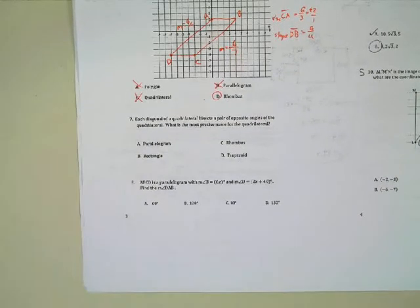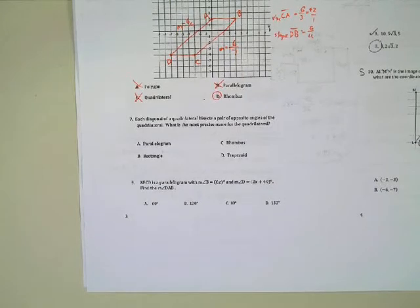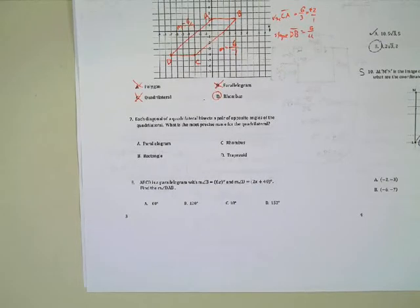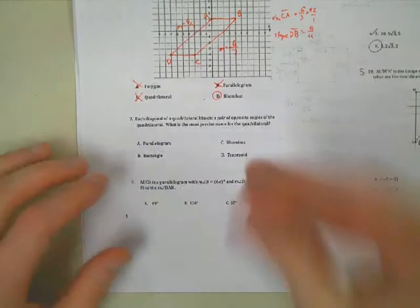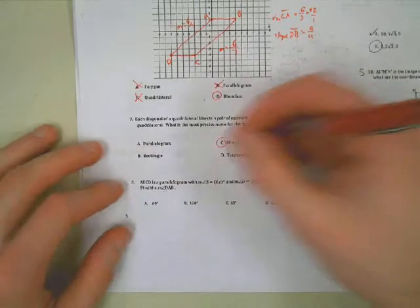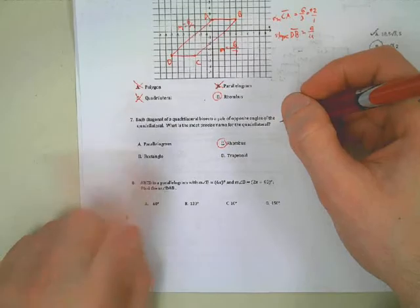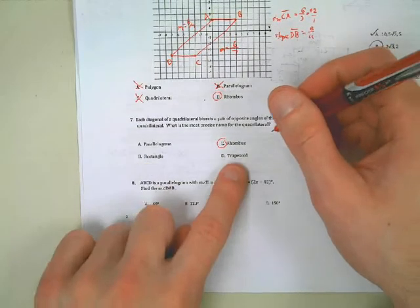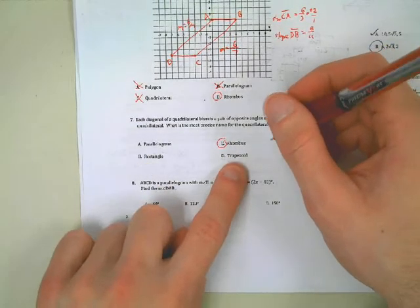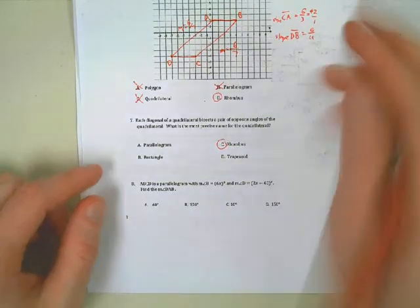Number seven: each diagonal of a quadrilateral bisects a pair of opposite angles of the quadrilateral — what is the most precise name for the quadrilateral? Rhombus — exactly right. Parallelogram, not necessarily true. Rectangle, not necessarily true. Trapezoid, not necessarily true. But certainly true for C — rhombus. Good job, Julie.